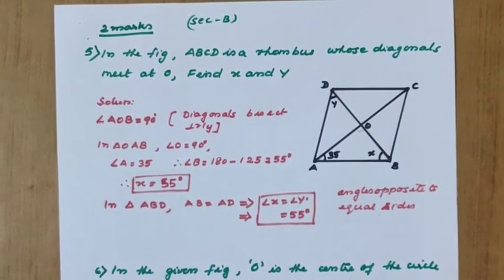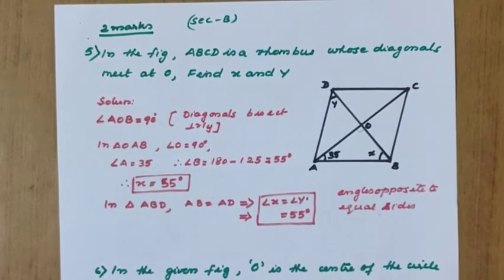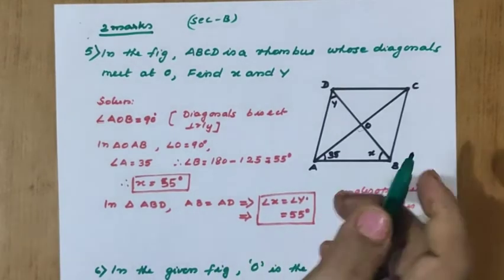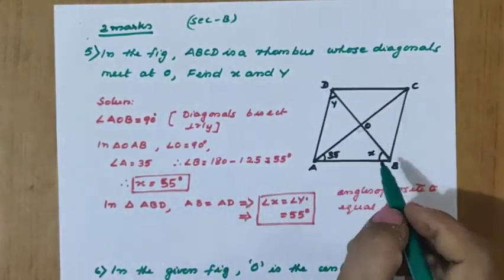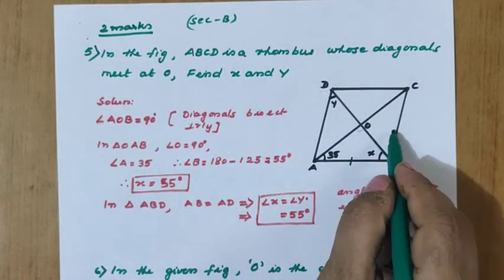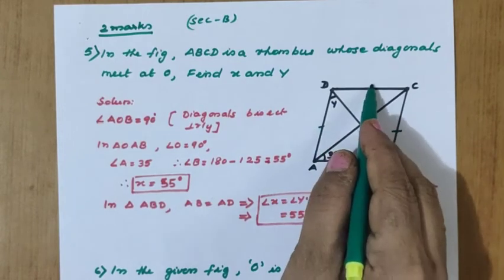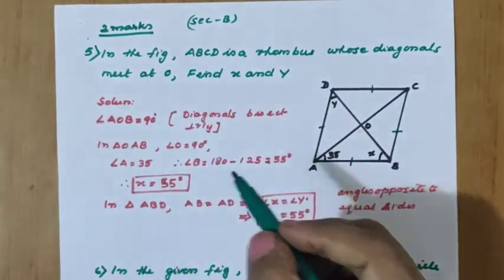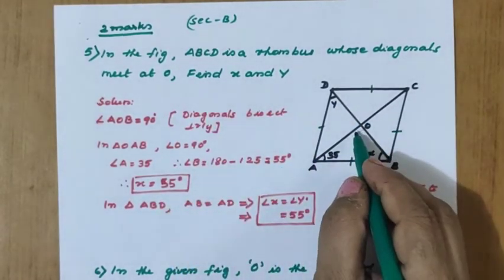Now Section B starts. It is for two marks. Question number 5: in the figure ABCD is a rhombus whose diagonals meet at O. Find X and Y. ABCD is a rhombus — we can mark that all four sides are equal and the diagonals meet at O.